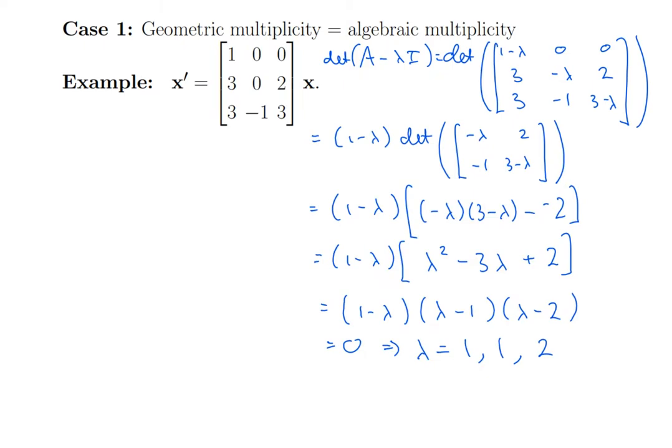I've chosen a different example here than the one in the printed study guide that goes with this lecture, so you can regard that one as just another example of the same phenomenon. The numbers in that example come out slightly more complicated, so I thought I'd pick an easier one for the video. For the purposes of illustration, I'm not going to bother calculating the eigenvector that goes with lambda equals 2 — I want to illustrate what happens with the repeated eigenvalue.